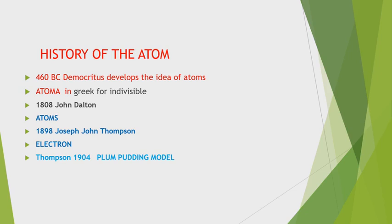Thomson proposed that the atom was made up of electrons scattered unevenly within an elastic sphere surrounded by a group of positive charges, to balance the electron charge — like plums surrounded by pudding. So his model is called the Plum Pudding Model.